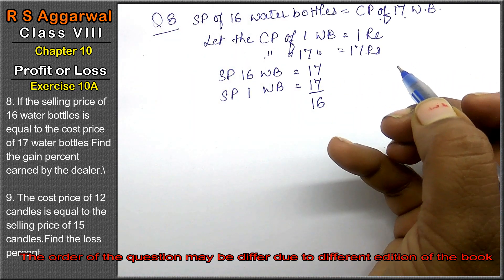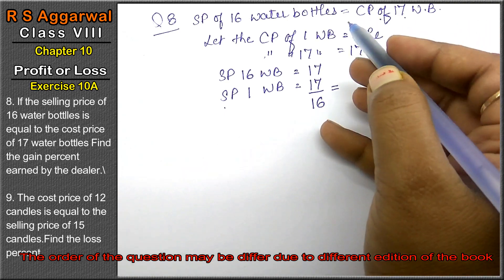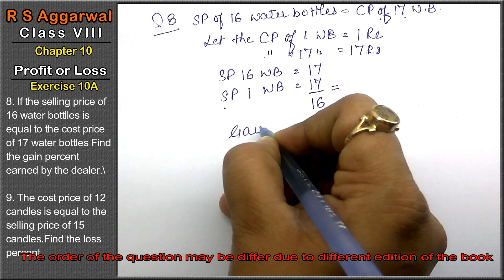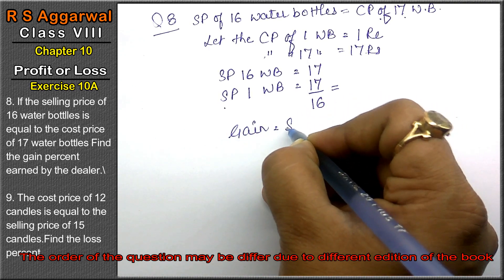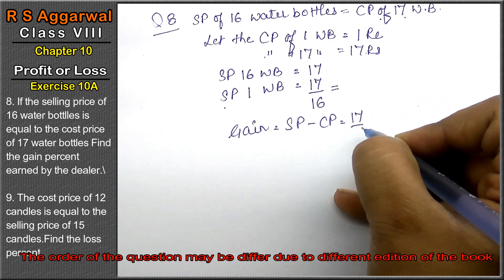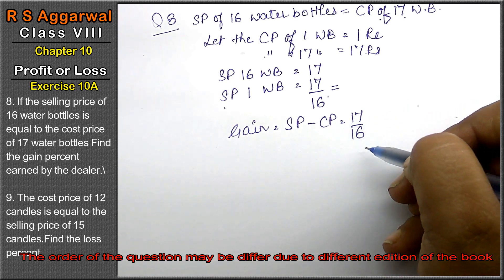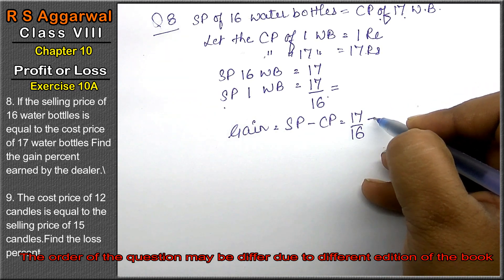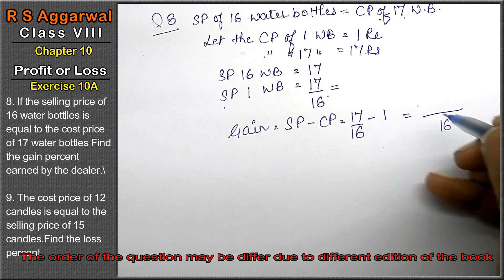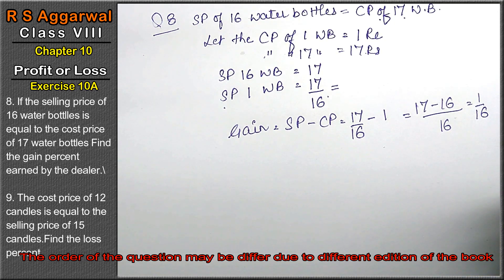Since the SP is greater than the CP, we have a gain. Gain equals SP minus CP, that means 17 upon 16 minus 1 rupee. Taking LCM of 16: 17 minus 16 equals 1 upon 16. So the gain is 1 upon 16.